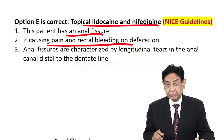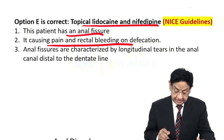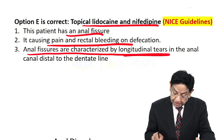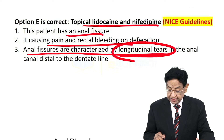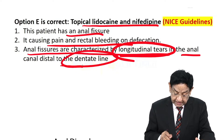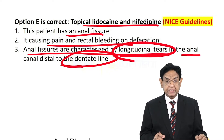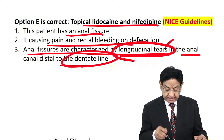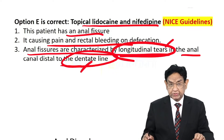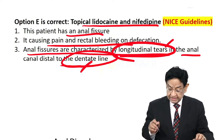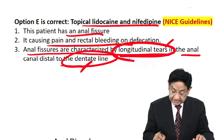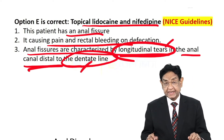Anal fissures are characterized by a longitudinal tear in the anal canal, distal to the dentate line. Two important points to note: it is a longitudinal tear, and it is located distal to the dentate line — which will be discussed in later slides.